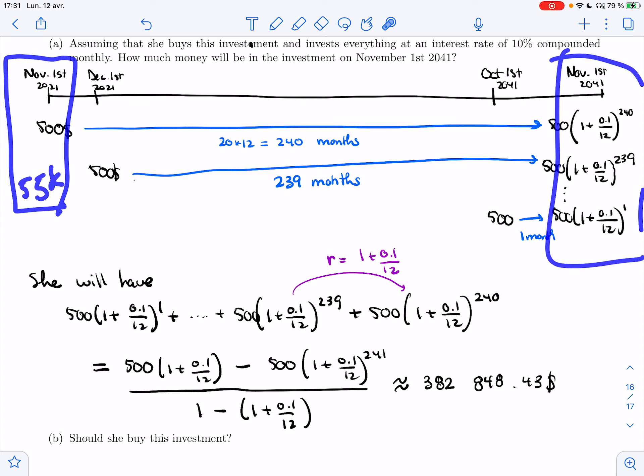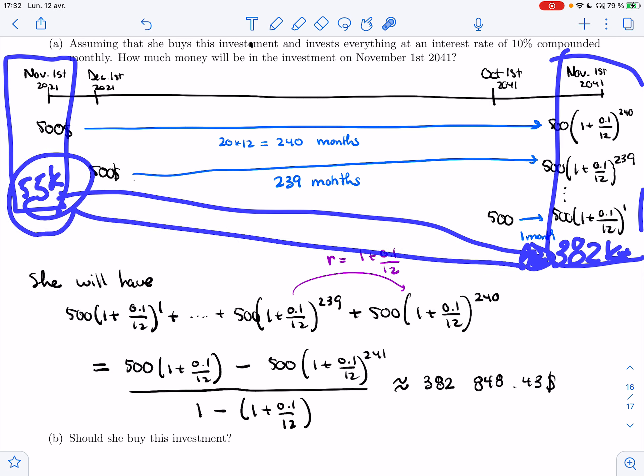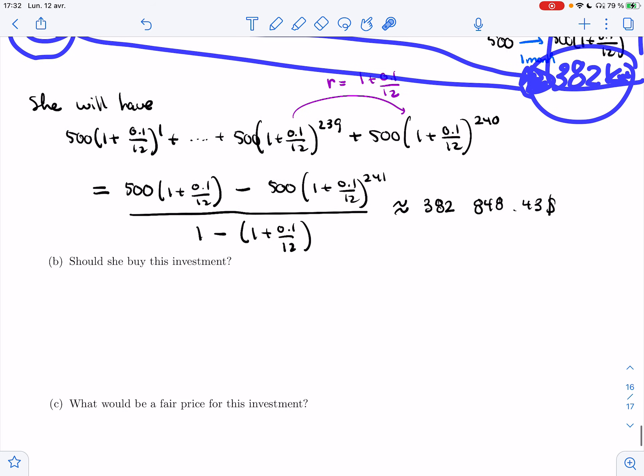The problem is the $55,000 she needs to pay here on November 1st. The $382,000 she would get over here. So I can't really compare the two because you can think of it as inflation or the money here is not worth the same as the money there. And so what I need to do is either take that $55,000 and bring it to November 1st, 2041 or bring this one back. So let's bring the $55,000 forward.